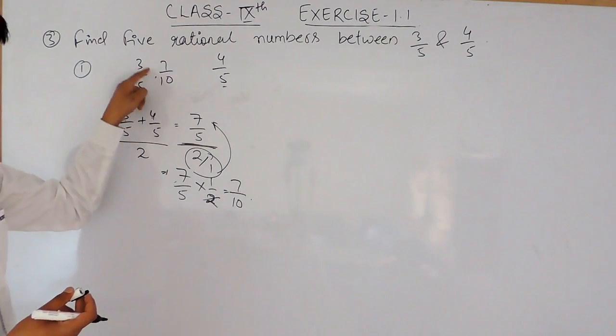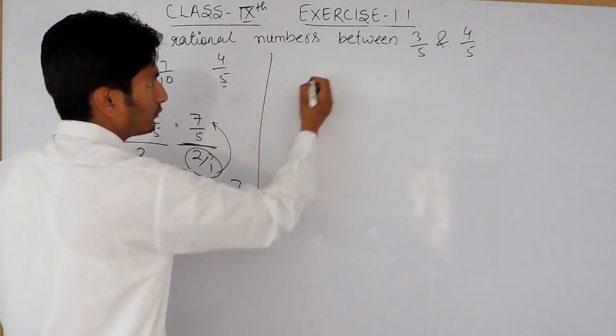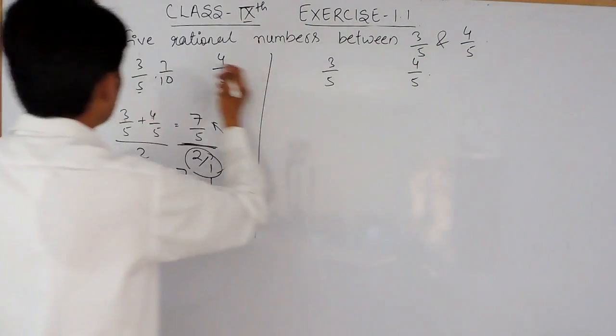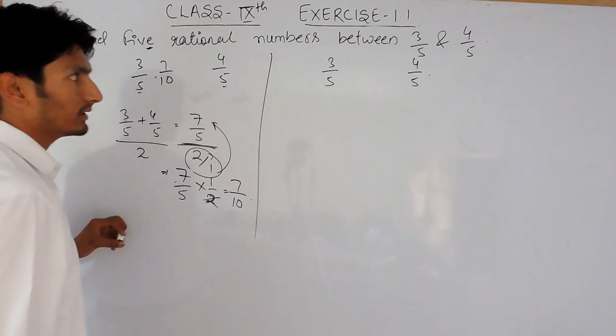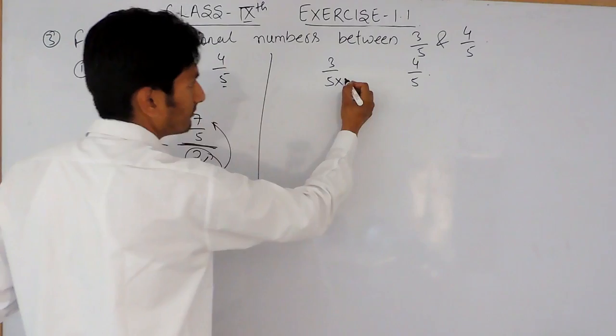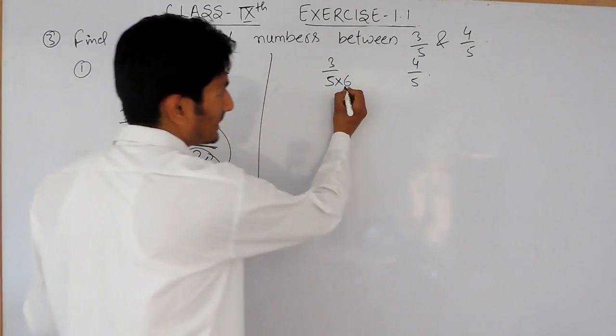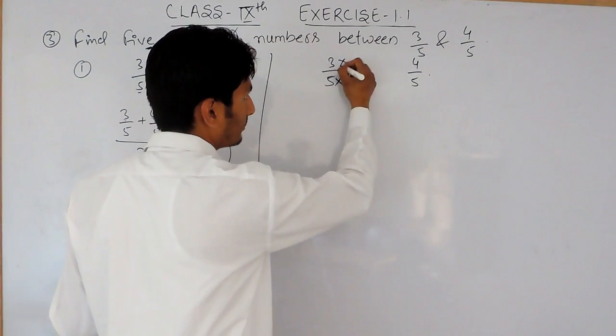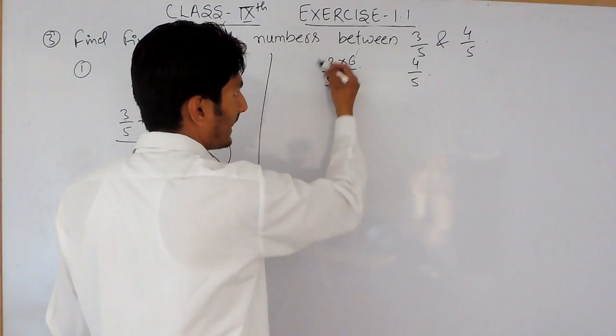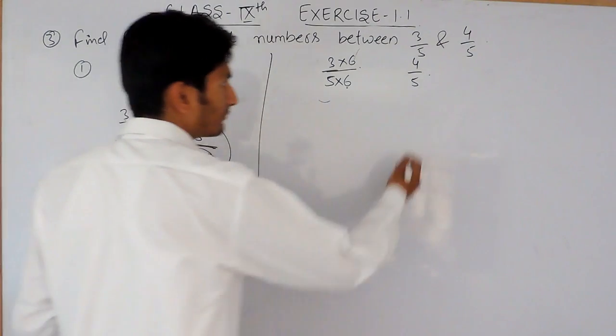There is another method if you want to find 5 rational numbers between 3 upon 5 and 4 upon 5. You have to multiply with 5 plus 1, which is 6. If you are multiplying the denominator with 6, you have to multiply the numerator with 6 also, so that 6 and 6 can be cancelled and the expression will remain the same.